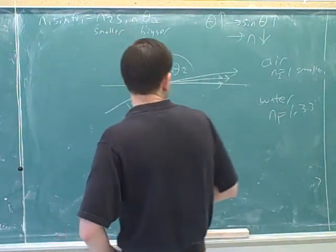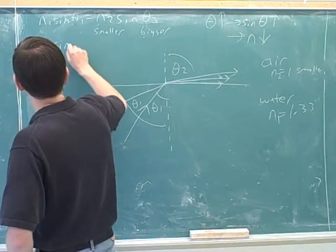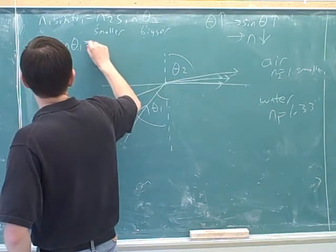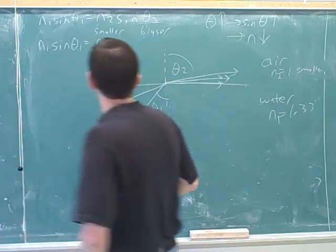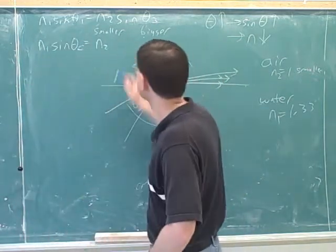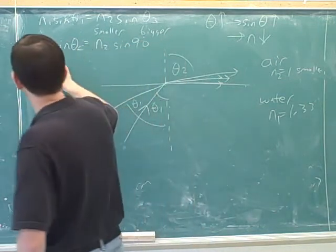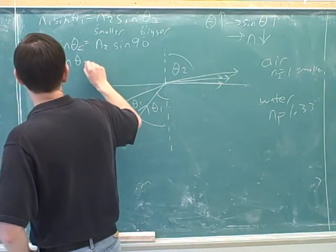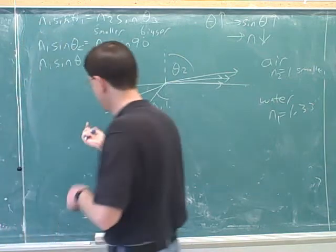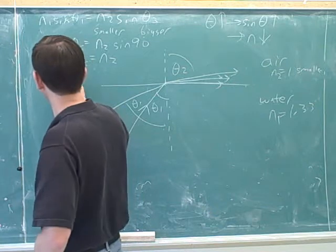So let's actually get the equation for that over here. So we're going from N1 sine theta 1 equals N2. Now, we want to figure out what our critical angle is. So it's sine theta 2, 90. So it's just 1 so that the sine theta critical is N2 divided by N1.